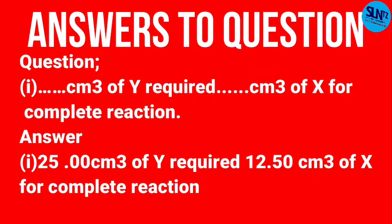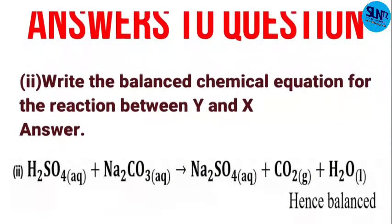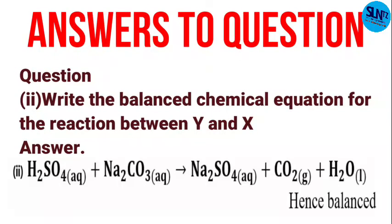Solution Y is the base and X is the sulfuric acid solution. The balanced chemical equation is: H₂SO₄(aq) + Na₂CO₃ → Na₂SO₄ + CO₂ + H₂O. That is the neutralization reaction between acid and carbonate. Note that sodium carbonate is hydrated, but when writing the balanced equation the water of crystallization is not included — you will use it when solving for the value of n.